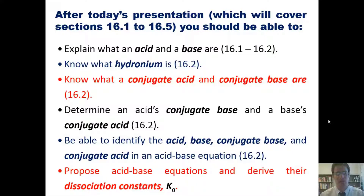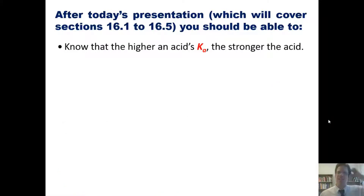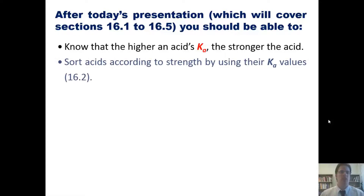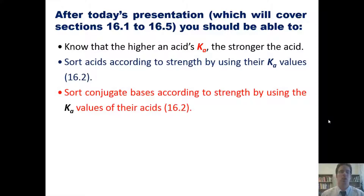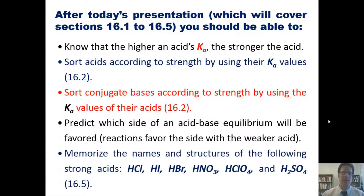Furthermore, after this series of lectures, you should also be able to propose acid-base equations and derive their dissociation constants, or Ka expressions. Know that the higher an acid's Ka, the stronger the acid. Sort acids according to their strength by using their Ka values. Sort conjugate bases according to strength by using the Ka values of their acids. And predict which side of an acid-base equilibrium will be favored. And memorize the names and structures of the strong acids listed here.